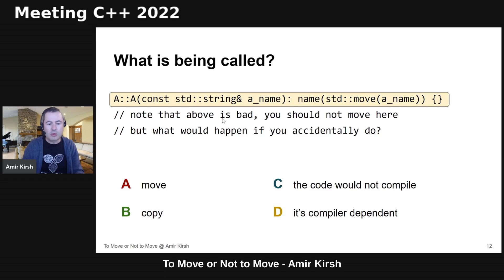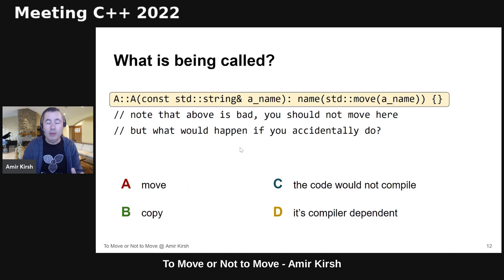What is called in the next example? I have a constructor for A taking a 'const string&'. Then I call std::move on it — which I should not, because the caller may use it afterward. But the question is: what actually happens? Would it move, copy, fail to compile, or be compiler-dependent?